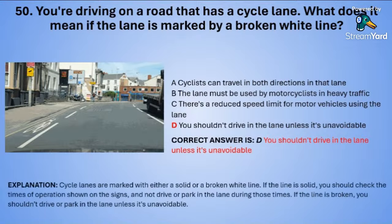Cycle lanes are marked with either a solid or a broken white line. If the line is solid, check the times of operation shown on the signs and don't drive or park in the lane during those times. If the line is broken, you shouldn't drive or park in the lane unless this is unavoidable.